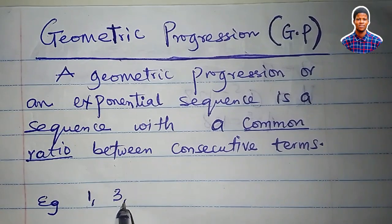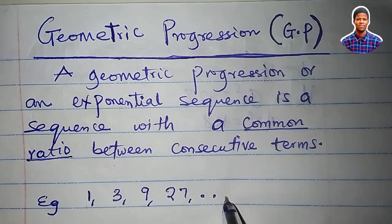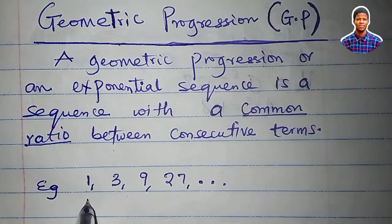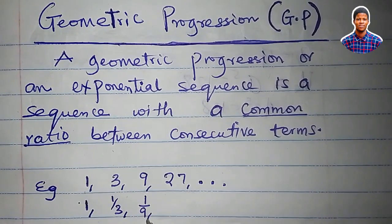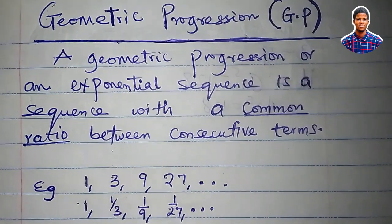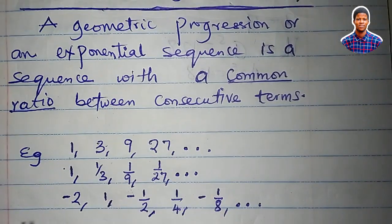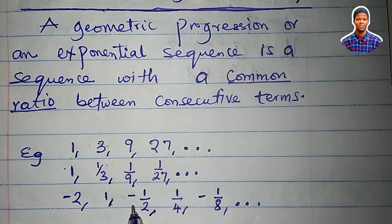For example, consider the sequence 1, 3, 9, 27, and so on. Or the sequence 1, 1/3, 1/9, 1/27, and so on. How do I know that each of these sequences are exponential sequences? It is the common ratio that will tell me whether it is a geometric sequence or not.